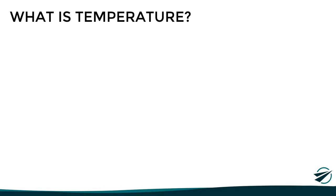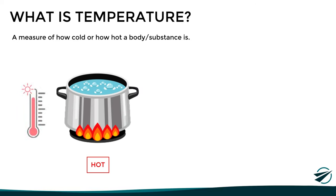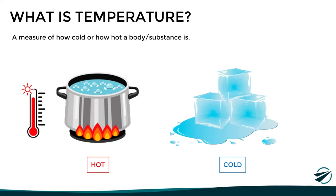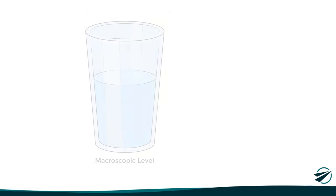Let's start by looking at what temperature is. According to our daily experience, we could say that this is a measure of how cold or how hot an object or substance is. If it is very hot, we say it has a high temperature, and if it is very cold, we say it has a low temperature. But this definition is far from the real concept of temperature. To understand this better, let's look at the following example.